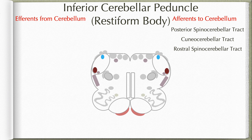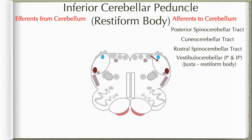The posterior spinocerebellar tract carries information from the lower limb, whereas the cuneocerebellar and rostral spinocerebellar tracts carry information from the upper limbs. Next, we have input from the vestibular apparatus — that is, vestibulocerebellar tracts — which can be primary or secondary fibers. Primary fibers start from the vestibular nerve itself and join the inferior cerebellar peduncle to reach the cerebellum. Secondary fibers relay in the vestibular nucleus, and the second-order neuron fibers then join the inferior cerebellar peduncle. Both groups form a surface elevation on the inferior cerebellar peduncle and are given a special name: the juxtarestiform body.